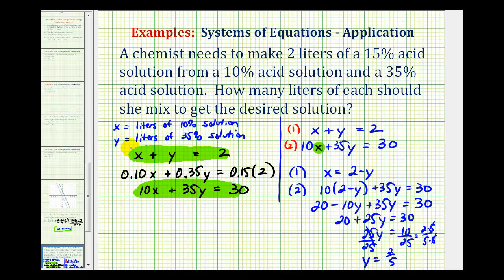Remember, y is the number of liters of the 35% solution. So we know that y equals 2/5. We still have to go back and determine x.